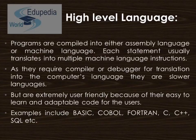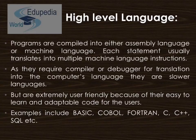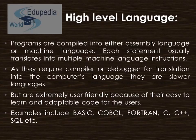Now come high-level languages. Programs are compiled into either assembly language or machine language, and each statement usually translates into multiple machine language instructions. They require a compiler or debugger for translation into the computer's language, making them slower but extremely user-friendly. As we saw, machine language is not possible for most people to write, and assembly language still requires memorizing mnemonic codes. High-level languages are extremely user-friendly with much simpler, adaptable code that is easy to learn. Examples include BASIC, COBOL, FORTRAN, C, C++, and Structured Query Language.